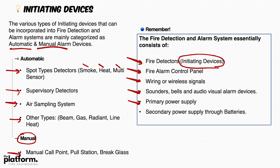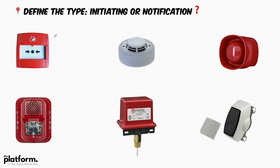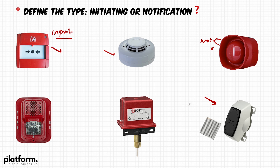As explained in lecture two, initiating devices are considered the input to the fire alarm control panel. Looking at these photos — a break glass or call point is an input, so it is an initiating device. A smoke detector is also an initiating device. A sounder gives notification in case of fire, so it is a notification device, not initiating. A beam detector transmitter and receiver, a supervisory tamper switch, and a flow switch are all initiating devices. An audio-visual flasher or sounder with flasher is a notification device.